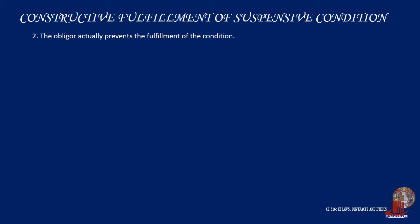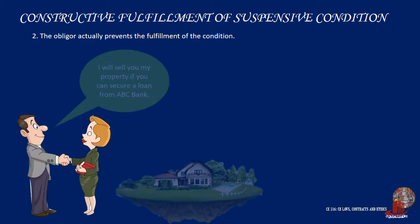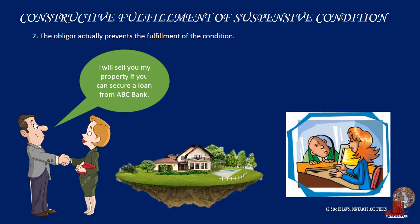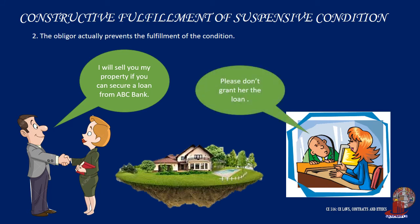The second requisite for constructive fulfillment is the obligor actually prevents the fulfillment of the condition. In another example, the owner promised to sell his land to a buyer if the buyer would be able to secure a loan from a certain bank. Later on, the owner changed his mind about selling his land, so he induced the bank not to give the buyer a loan. Under the above article, the condition is deemed complied with, the owner is liable to sell his land, and the owner should not be allowed to profit by his own fault or bad faith.